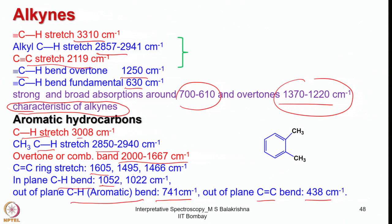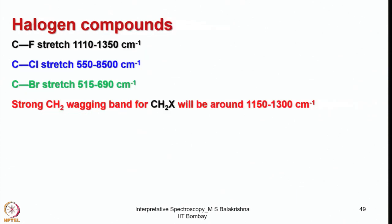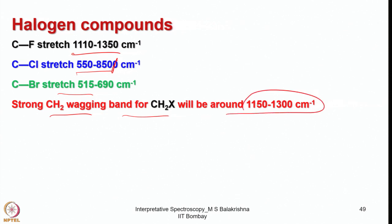There is no need to remember all those things. Now, what would happen if you have halogen bonds? Carbon-to-halogen bonds such as C–F, C–Cl, C–Br: the C–F stretch is in the range 1110 to 1350 cm⁻¹, the C–Cl stretch is 550 to 850 cm⁻¹, and the C–Br stretch is 550 to 690 cm⁻¹. The strong CH₂ wagging bond for CH₂X will be around 1150 to 1300 cm⁻¹.